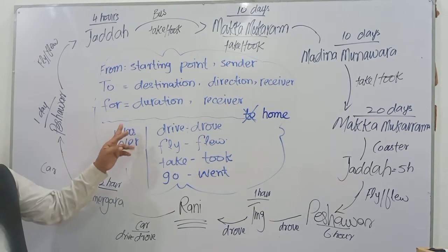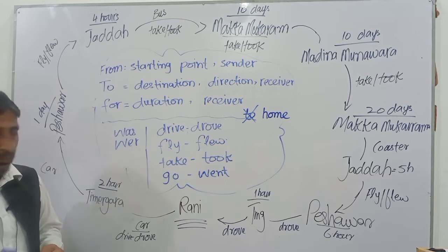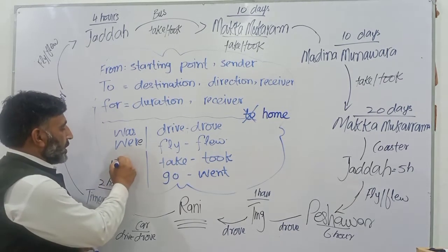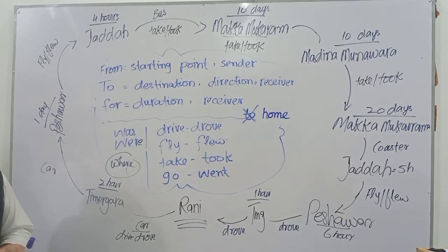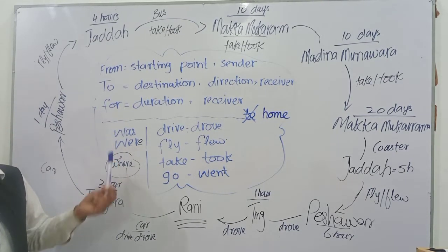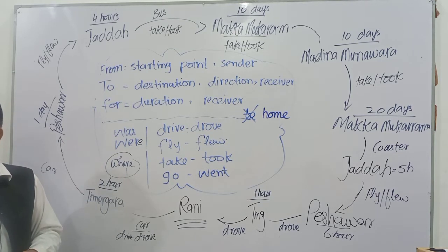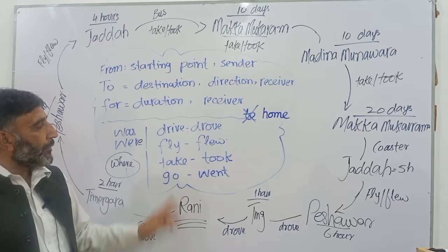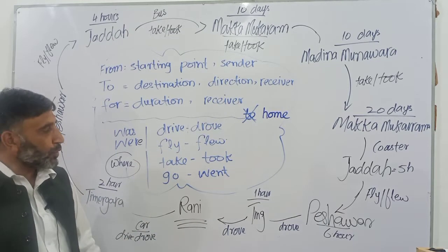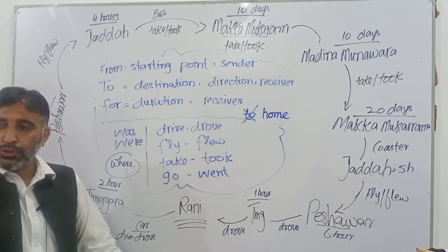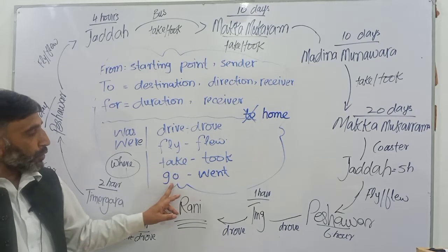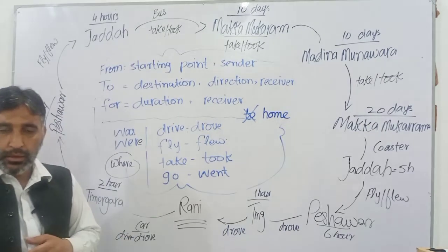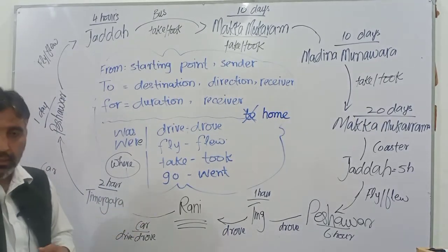For the past tense of 'to be': was is for singular and were is for plural. Pronounce it 'were,' not 'we're.' 'Was' should also be pronounced quickly — 'was,' not 'waz.' Past tense vocabulary: drive→drove, fly→flew, take→took (a lexical verb with multiple meanings), go→went.